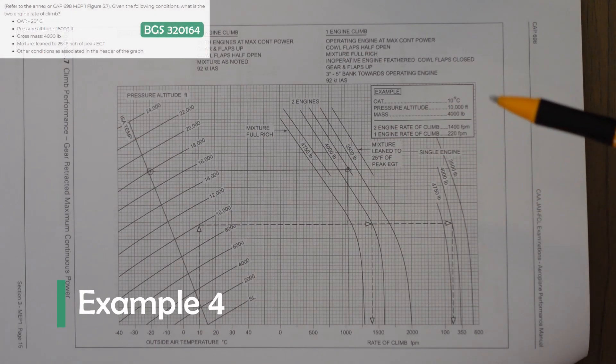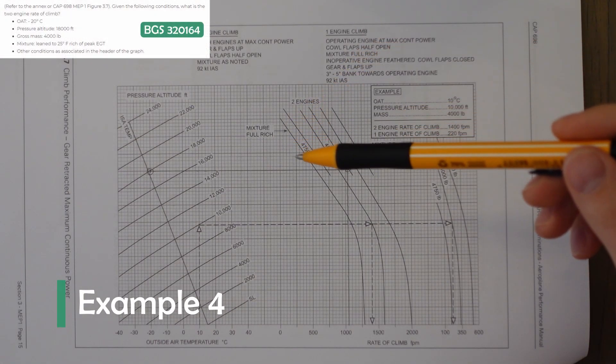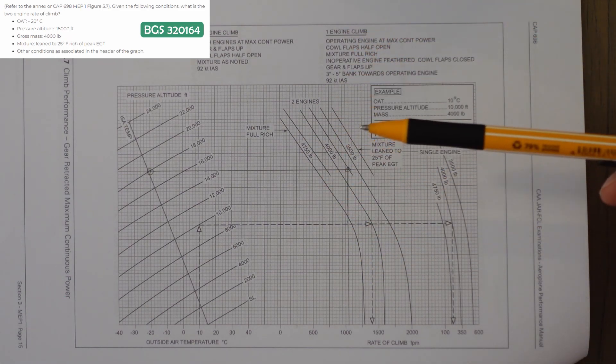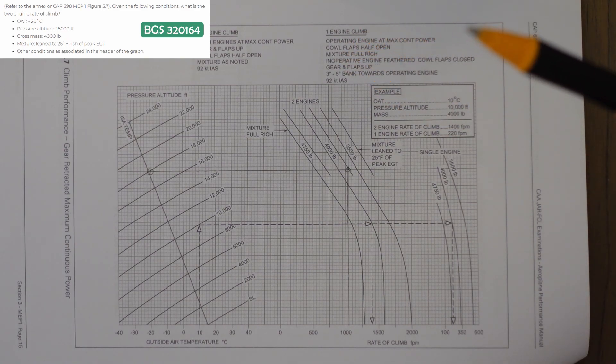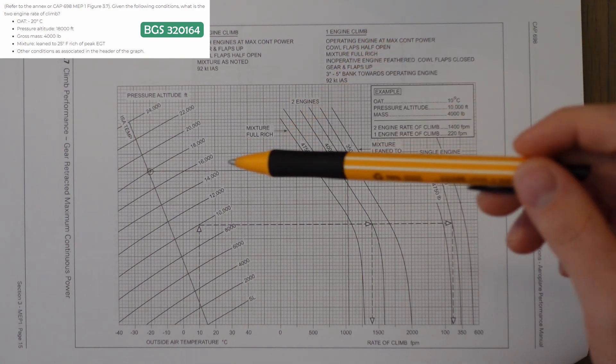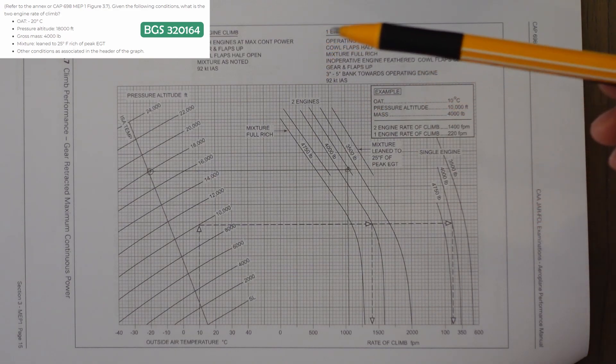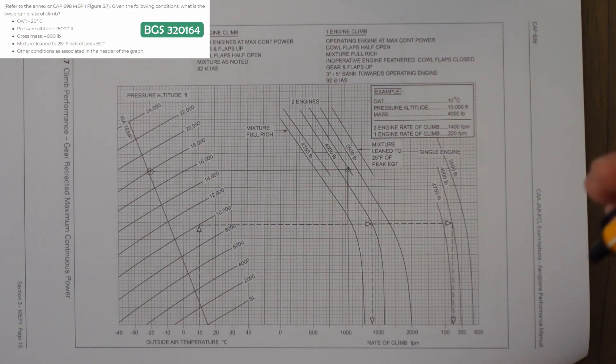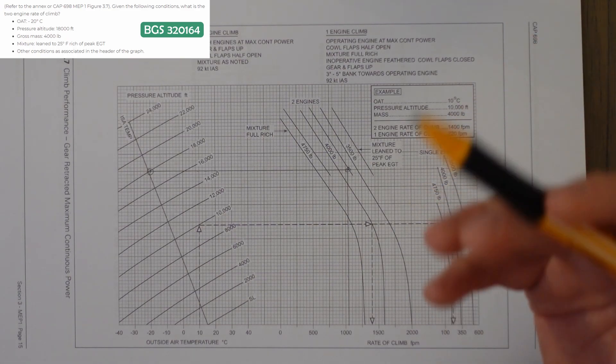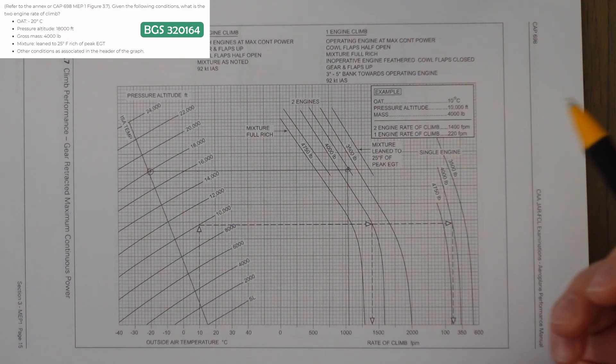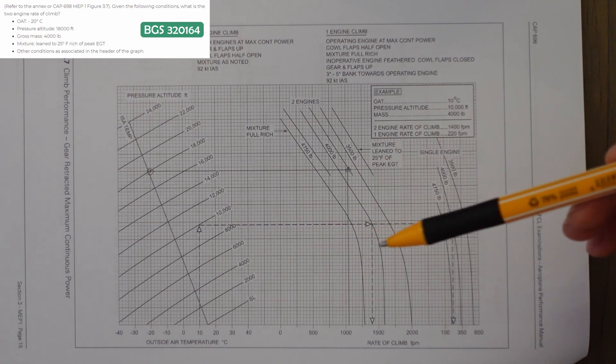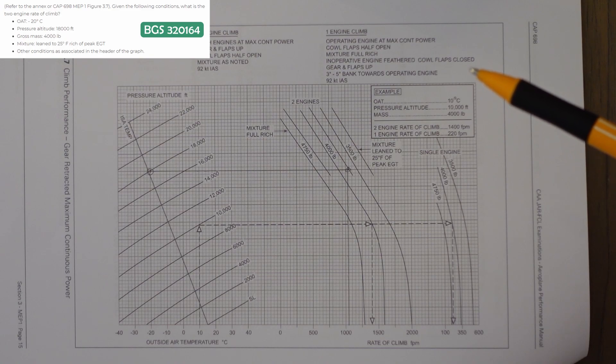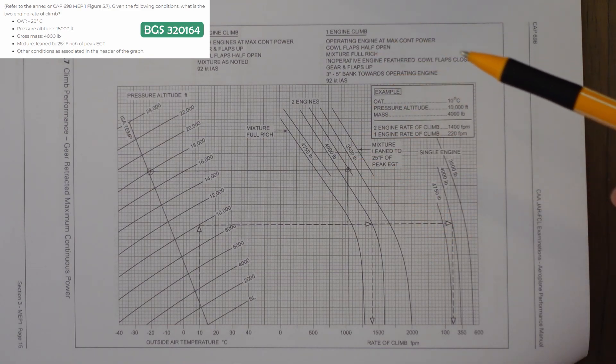In this question we're asked to find out the two-engine rate of climb with the following conditions. Temperature is minus 20, pressure altitude 18,000 feet, mass is 4,000 pounds. The mixture is lean to 25 degrees Fahrenheit of peak EGT, and other conditions are as per the graph header. This is a relatively simple question. We just need to put in the numbers in the graph.